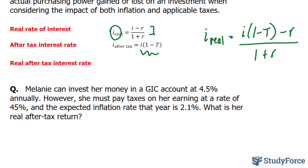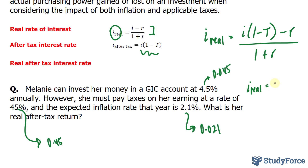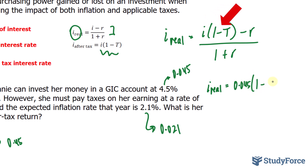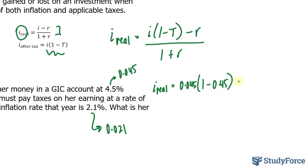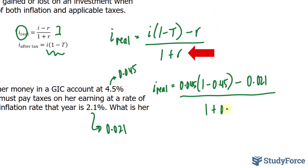With that, we have everything we need to answer this question. In place of capital T, I'll substitute 0.45. In place of R, it will be substituted with 0.021. And in place of little i, we'll have 0.045. Notice that all of these values are the number divided by 100%, and that's how we get those decimal equivalents. Substituting into the formula, we have I sub real equals 0.045 multiplied by (1 minus 0.45), minus 0.021, all divided by one plus 0.021.